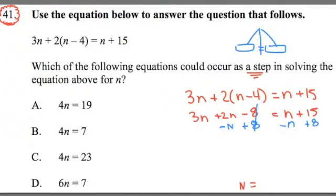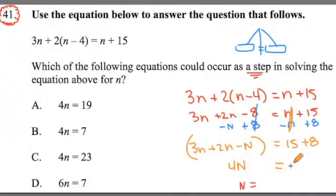All right. So I'm at this point here. The 8s cancel each other out. The ns cancel each other out. I'm left with 3n plus 2n minus n is equal to 15 plus 8. I add these terms up. That's 5 minus 1 is 4n is equal to 15 plus 8 or 23.